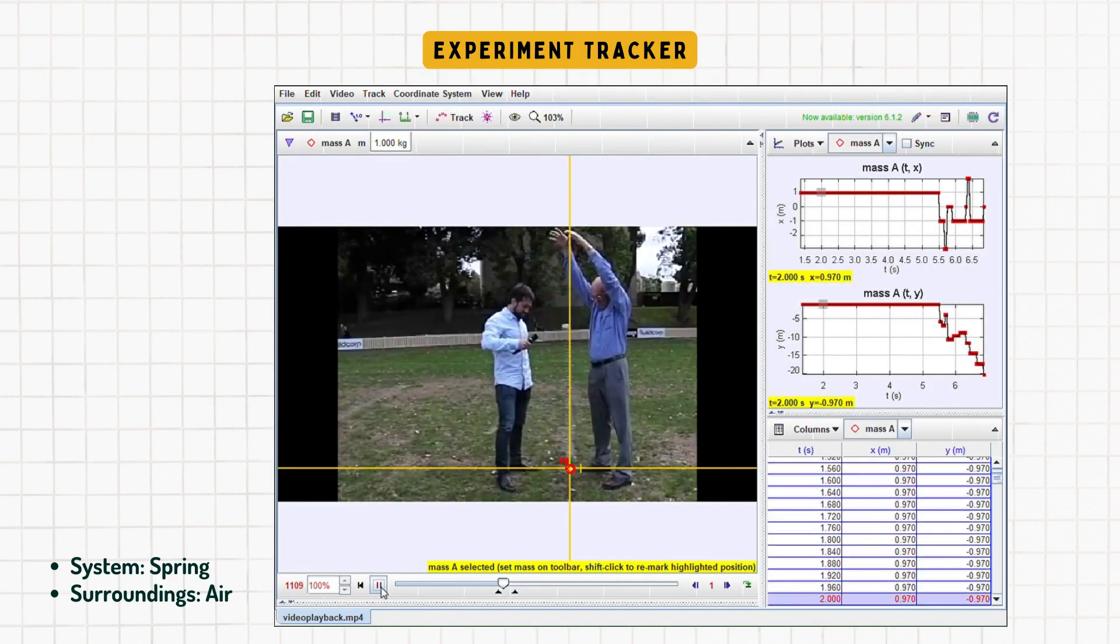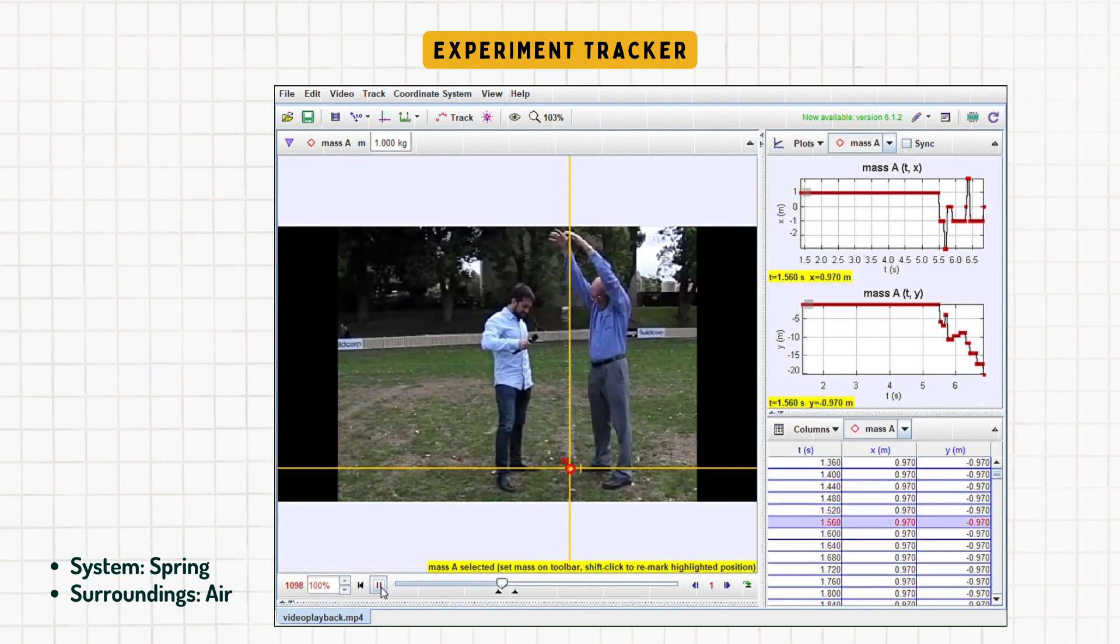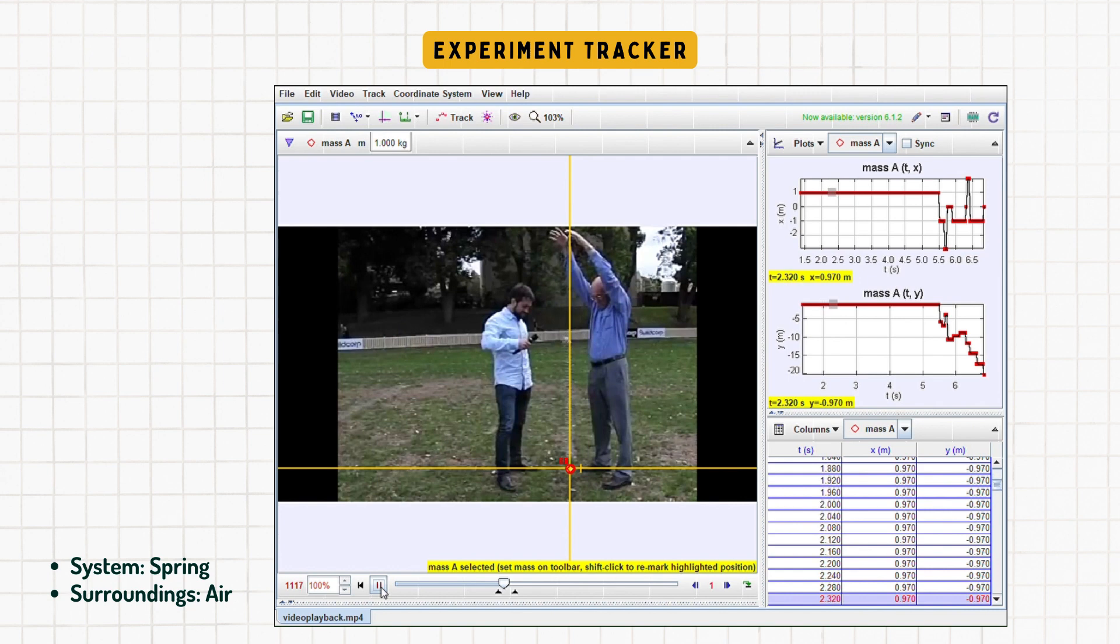Now, moving on to our experiment, the first thing that we did was analyze a video with Tracker. Also, disclaimer, this video was found on YouTube and I in no way produced this video. For the purpose of this video, our axis was set at the bottom of this slinky because that's the part that we wanted to analyze. In this case, our system is the spring and our surrounding is the air. As you can see, the bottom very much stays still until the top of this slinky reaches the bottom.